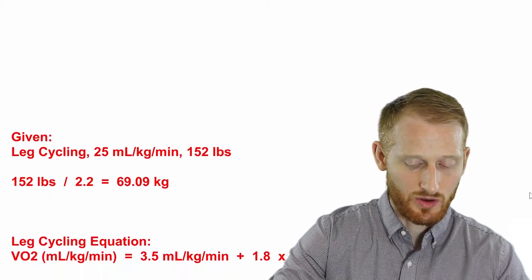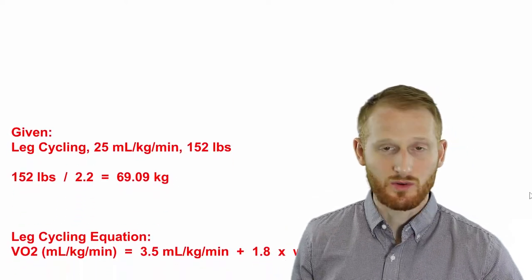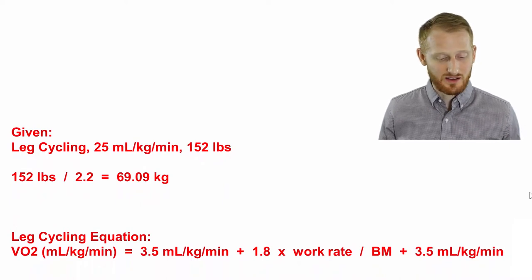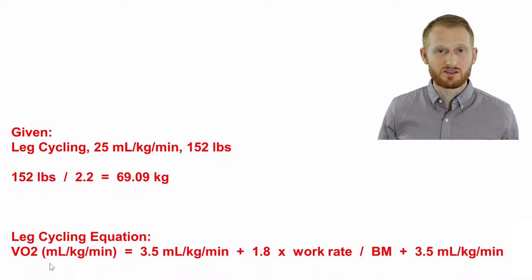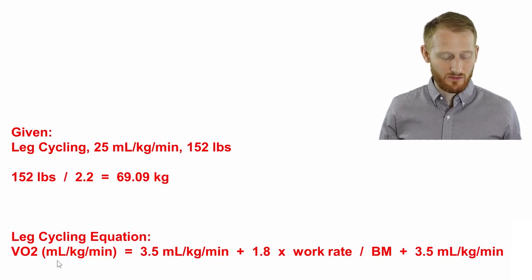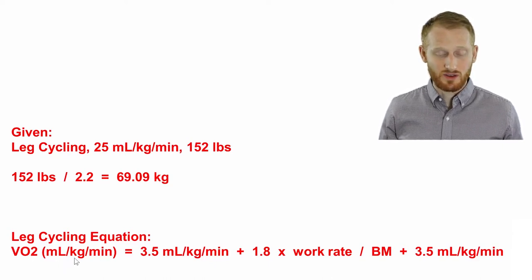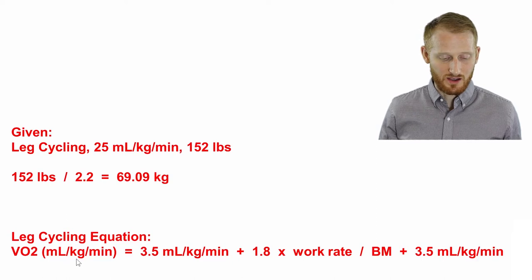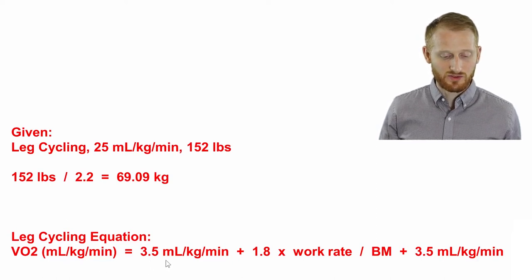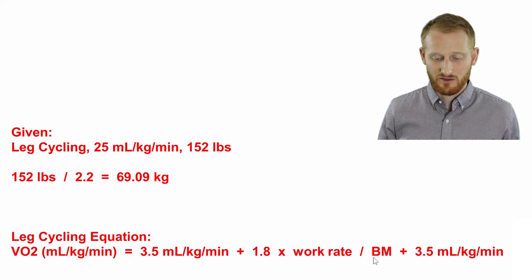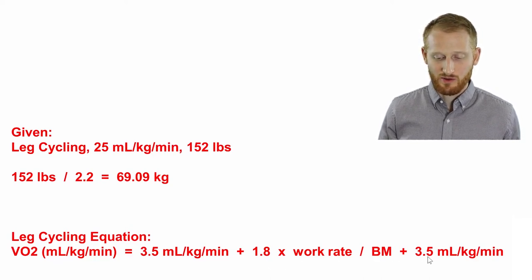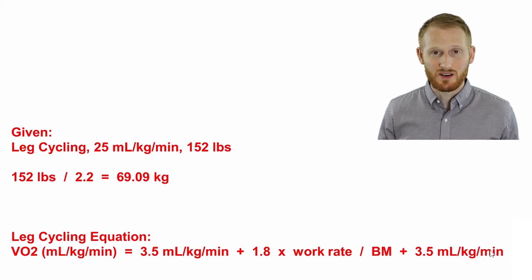Let's now look at the equation that we have to work with. Again, they're doing leg cycling, so we need the leg cycling equation. The leg cycling equation is oxygen consumption in milliliters per kilogram per minute equals 3.5 mls per kg per minute plus 1.8 times the work rate divided by the body mass plus 3.5 mls per kg per minute again.